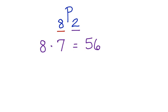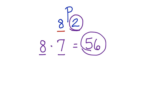Now you might be wondering where I got the seven from. We're going to take the friends two at a time, so we start with eight times seven — there's the first, there's the second number. By multiplying those together, we get the total number of combinations of ways to ride the ferris wheel.